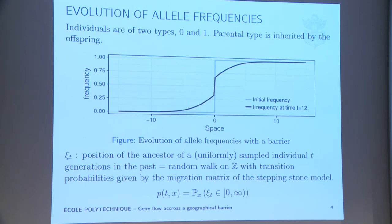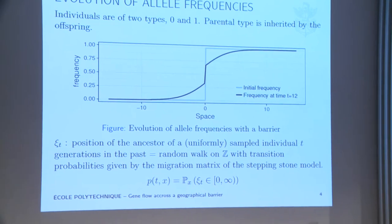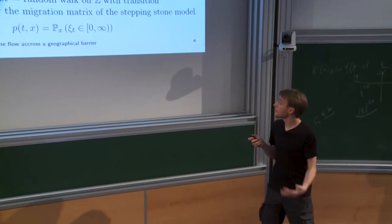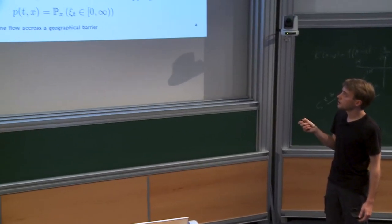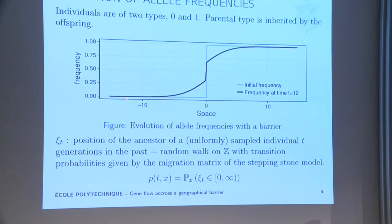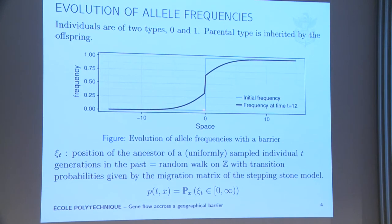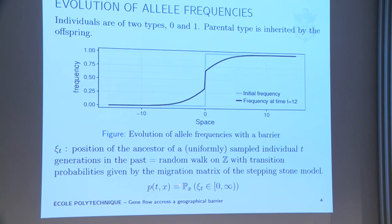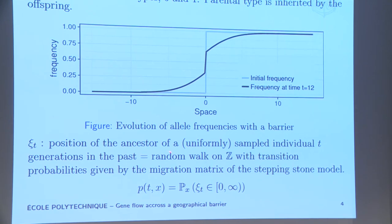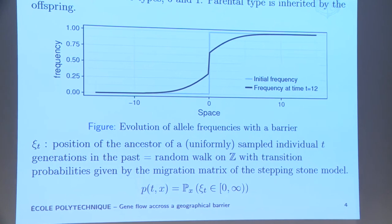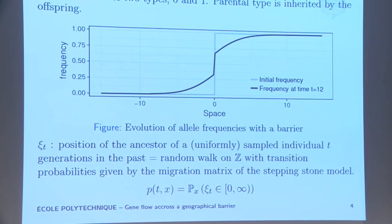There's a very nice way to think about this model here. Instead of thinking of individuals reproducing forwards in time, I think about sampling individuals and looking at where the ancestors lived back in time. Suppose I sample an individual in x. I look at its ancestor t generations ago, and I ask the question, what's the probability that the ancestor of this individual lived to the right of the barrier? This probability is going to be exactly the proportion of type 1 in my population.